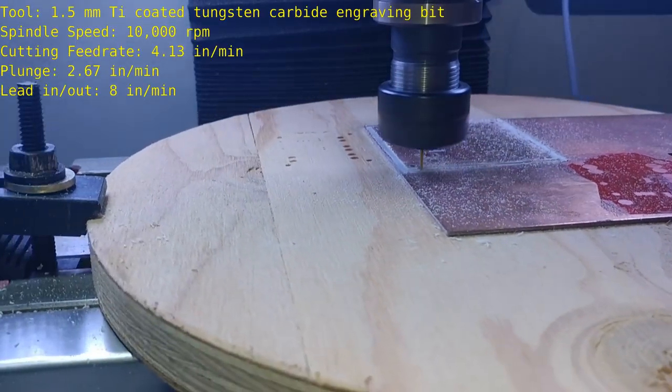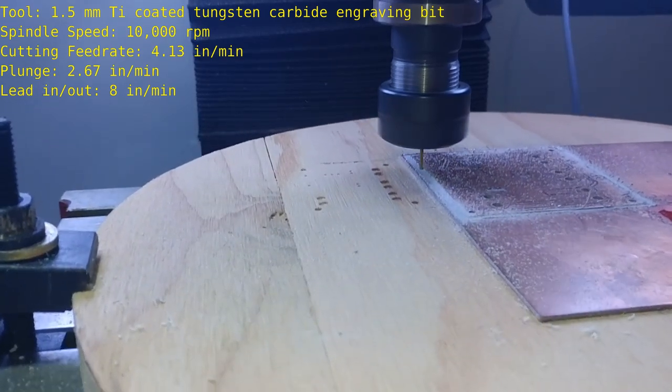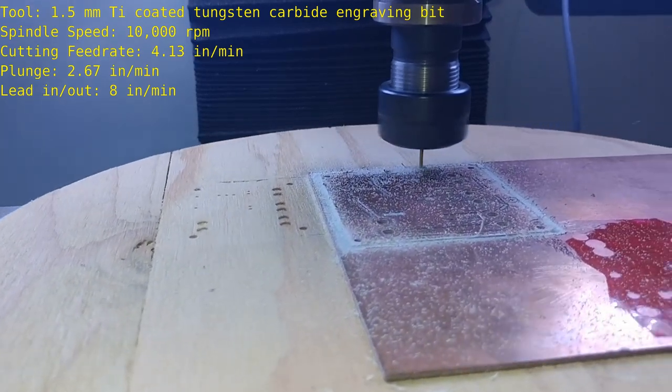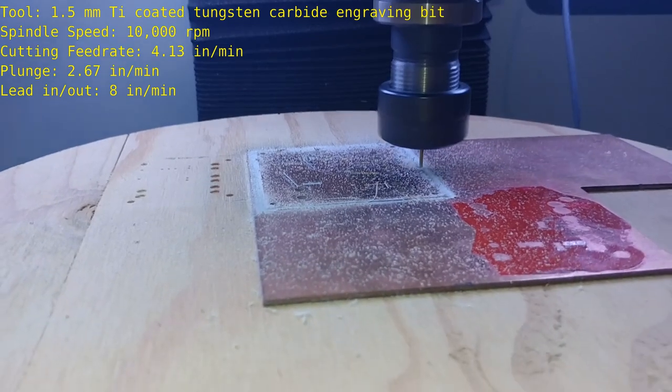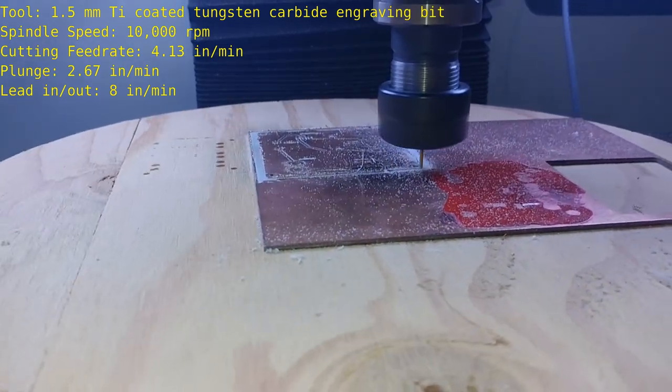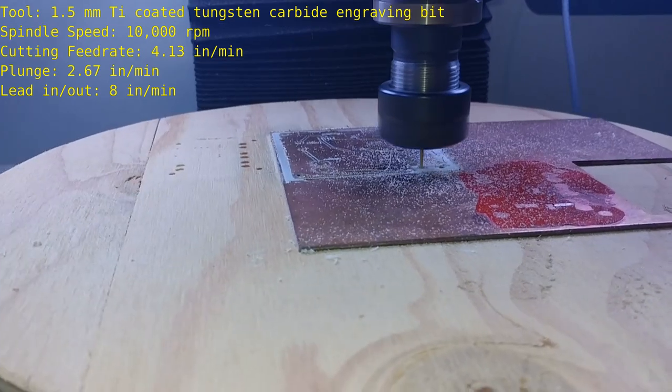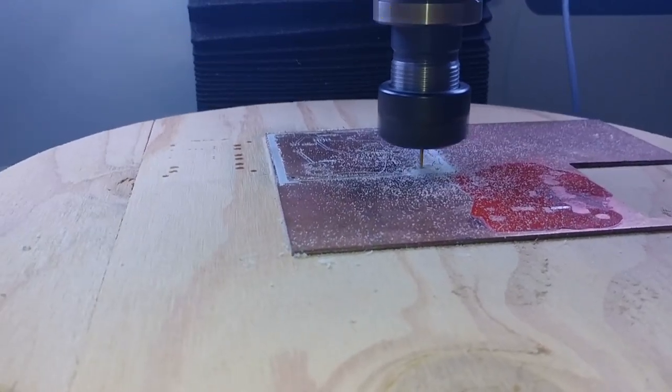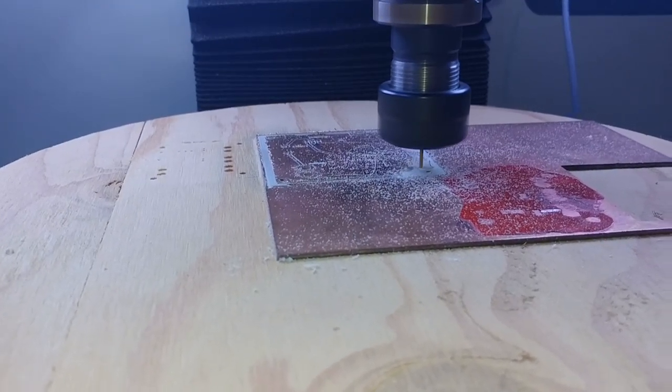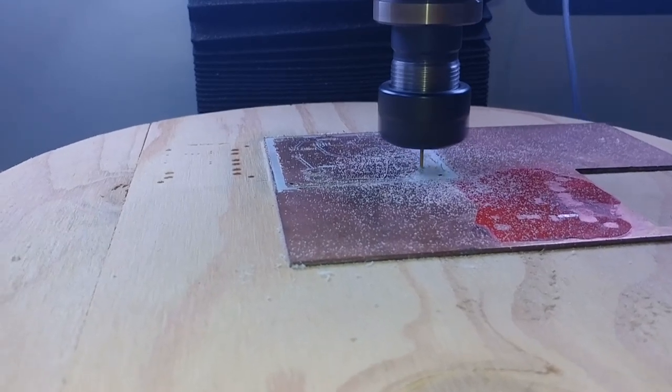This mill is often referred to as a burr. One of the advantages of using a tool like this is that it's capable of both conventional and climb milling. If you're not familiar with what that means, there's a link in the description below. When you can do both, the operations overall time can be significantly less.